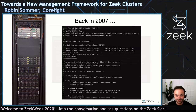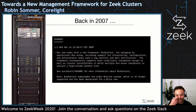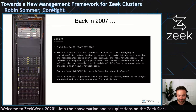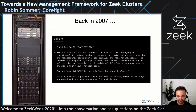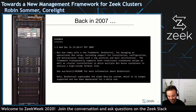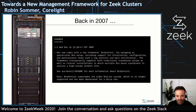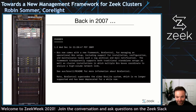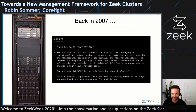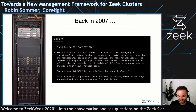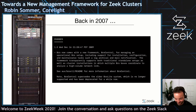That was still in 2007, and then in 2009 we merged this into what was Bro 1.5 at that point, and it became the new standard management framework. We renamed it from cluster shell to Bro control. If you look at that last sentence there, Bro control is already a second generation system — there was an older system called Bro Light which never gained much traction, but Bro control was replacing that.